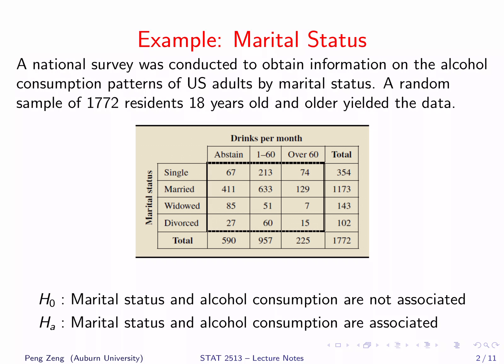A national survey was conducted to obtain information on the alcohol consumption patterns of US adults by marital status. A random sample of 1,772 residents 18 years old and older yielded the data. The marital status has four categories: single, married, widowed, and divorced. The alcohol consumption has three categories: abstain, 1 to 60 drinks per month, or over 60 drinks per month. We want to know whether marital status and alcohol consumption are associated.